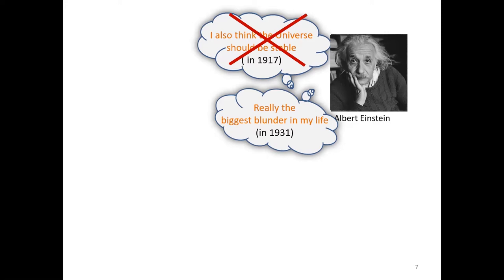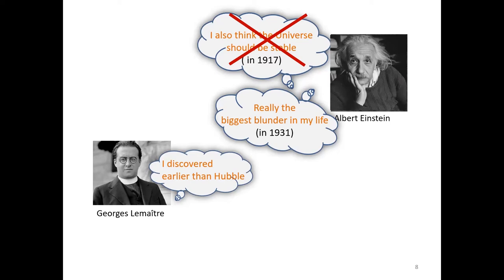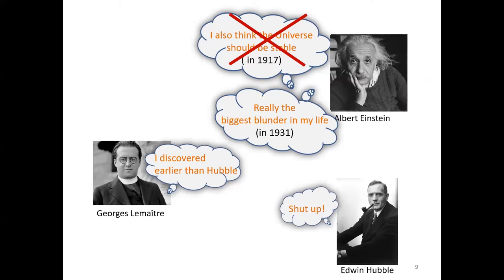Another person, Lemaitre, also discovered the expanding universe and even had it 2 years earlier than Hubble. The truth is, when Hubble discovered Lemaitre was doing the same topic with him, he used his power to make the editor delete Lemaitre's sentences about the expanding universe. So Edwin Hubble is the first person to discover the expanding universe in the English world.